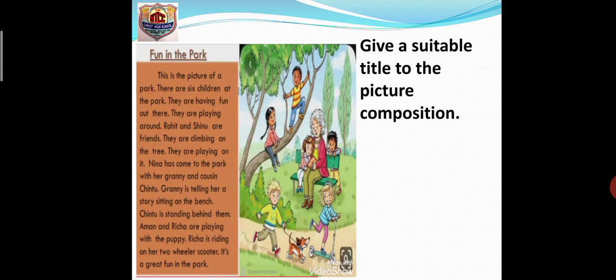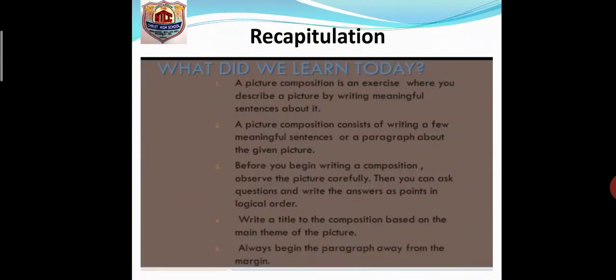Now let us have a recap of what we learned today. First: a picture composition is an exercise where you describe a picture by writing meaningful sentences about it. Second: a picture composition consists of writing a few meaningful sentences or a paragraph about the given picture. Third: before you begin writing a composition, observe the picture carefully, then ask questions and write the answers as points in logical order.